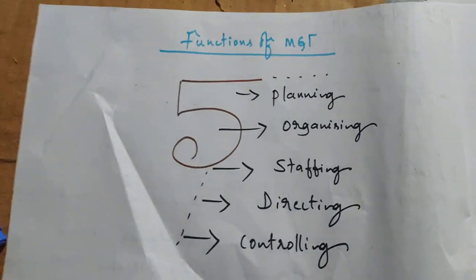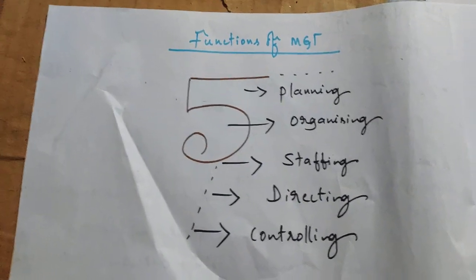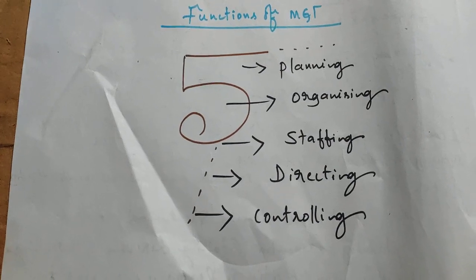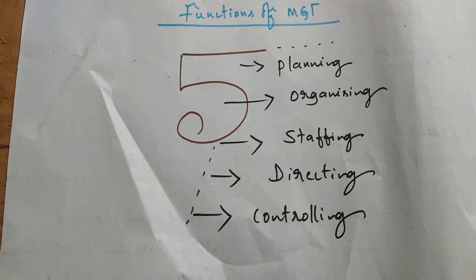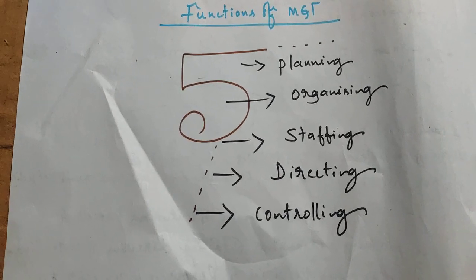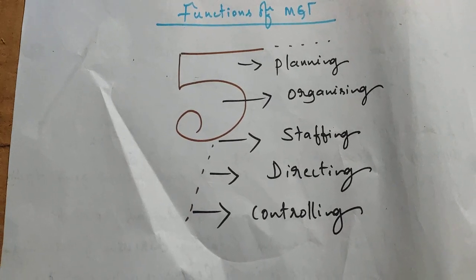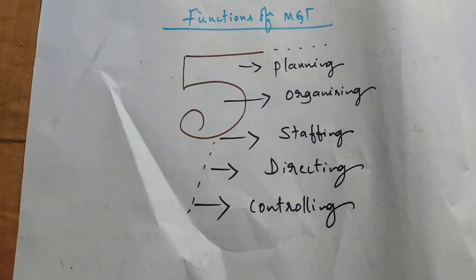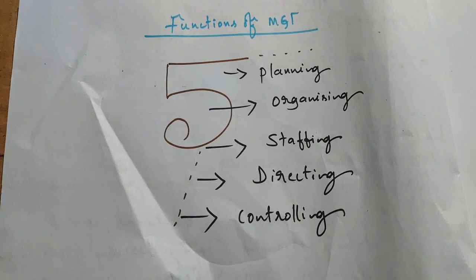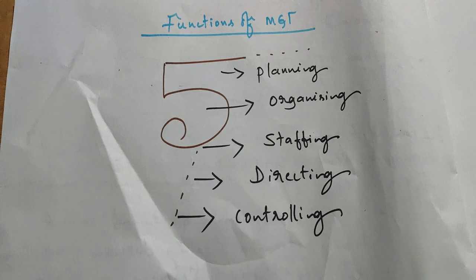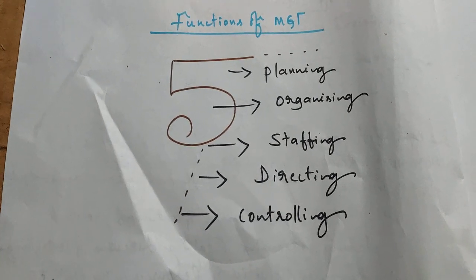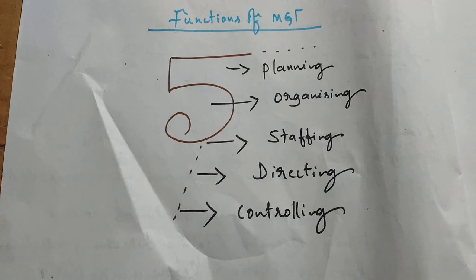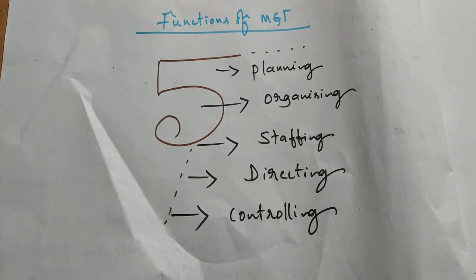Let us move towards the very important topic from an examination viewpoint — that is functions of management. There are five functions: planning, organizing, staffing, directing, and controlling. Management starts with planning and ends with controlling. Without these five functions, we cannot manage any business, activity, function, or process.